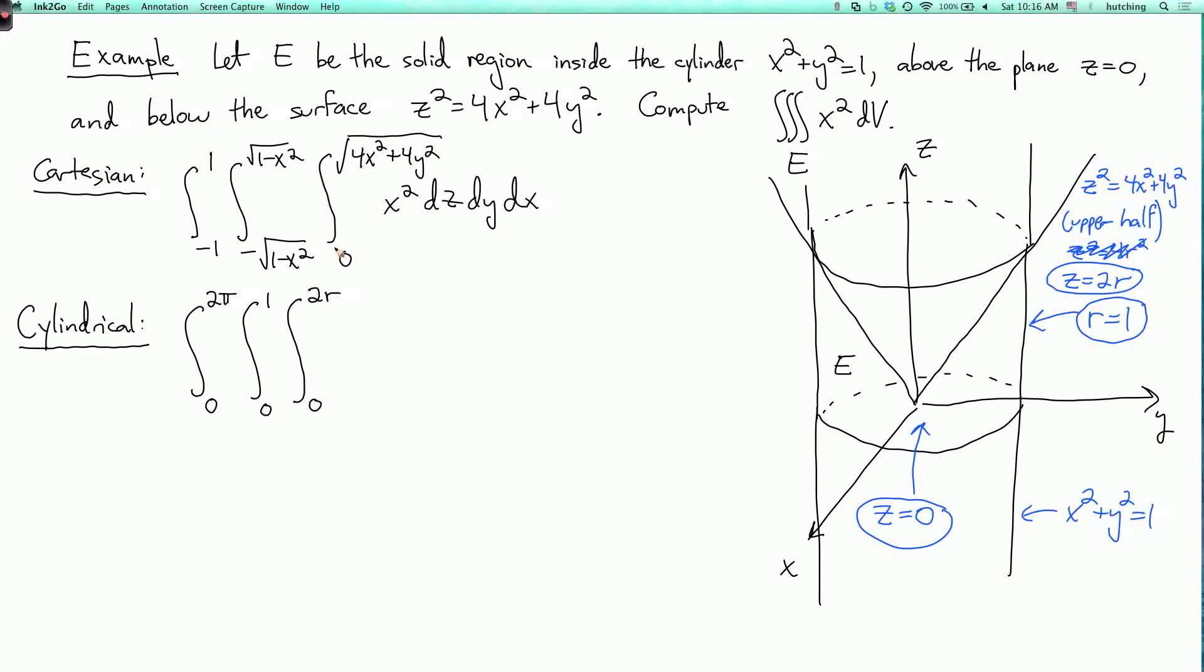So now our limits of integration look a lot nicer. Now I have to put in x squared, and I want to do everything in cylindrical, so I need to convert that to r squared cosine squared theta. And then I need the magnification factor, which is another r, and then this is dz, dr, d theta.